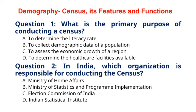Question 1: What is the primary purpose of conducting a census? A. To determine the literacy rate. B. To collect demographic data of a population. C. To assist the economic growth of a region. D. To determine the healthcare facilities available. The correct answer to question 1 is option B: To collect demographic data of a population.